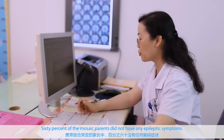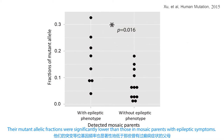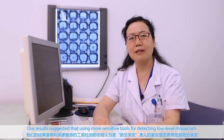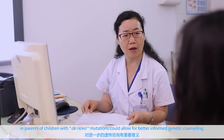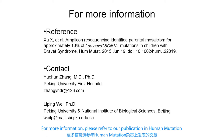The mutant allelic fractions were significantly lower than those in mosaic parents with epileptic symptoms. Our results suggested that using more sensitive tools for detecting low-level mosaicism in parents of children with de novo mutations could allow for better informed genetic counseling. For more information, please refer to our publication in Human Mutation or contact doctors Yue Hua Zhang and Li Ping Wei.